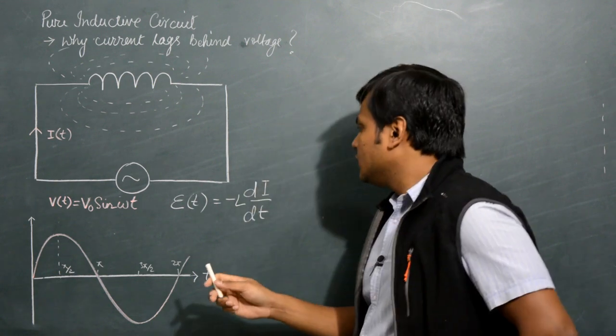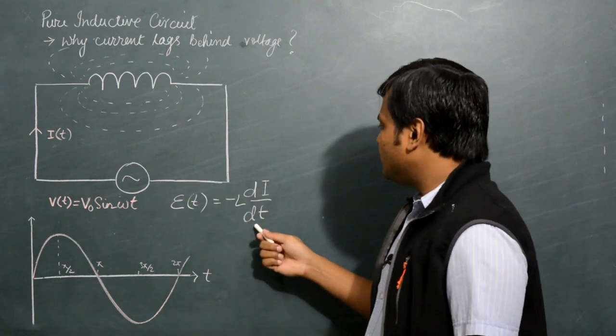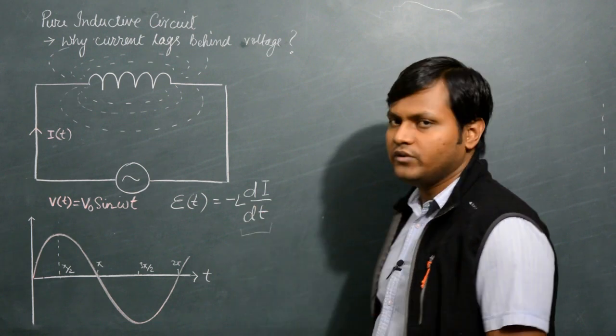...the formula E = -L di/dt. So the induced EMF is directly proportional to the rate of change of current with respect to time.